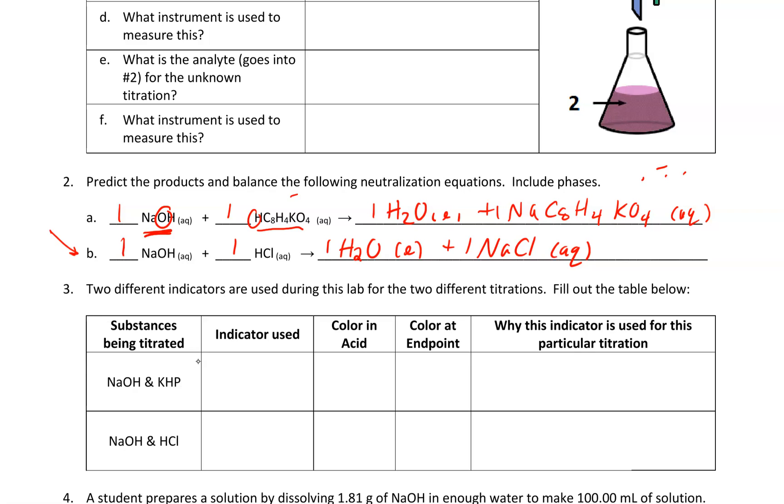During these two different titrations, we're going to be using two different indicators. When you titrate sodium hydroxide with KHP, we're going to use phenolphthalein. This is one I never spelled correctly, and I'm sure today will be no exception. P-H-E-N-O-L-P-H-T-H-A-L-E-I-N. Pretty close. Close enough. Phenolphthalein.